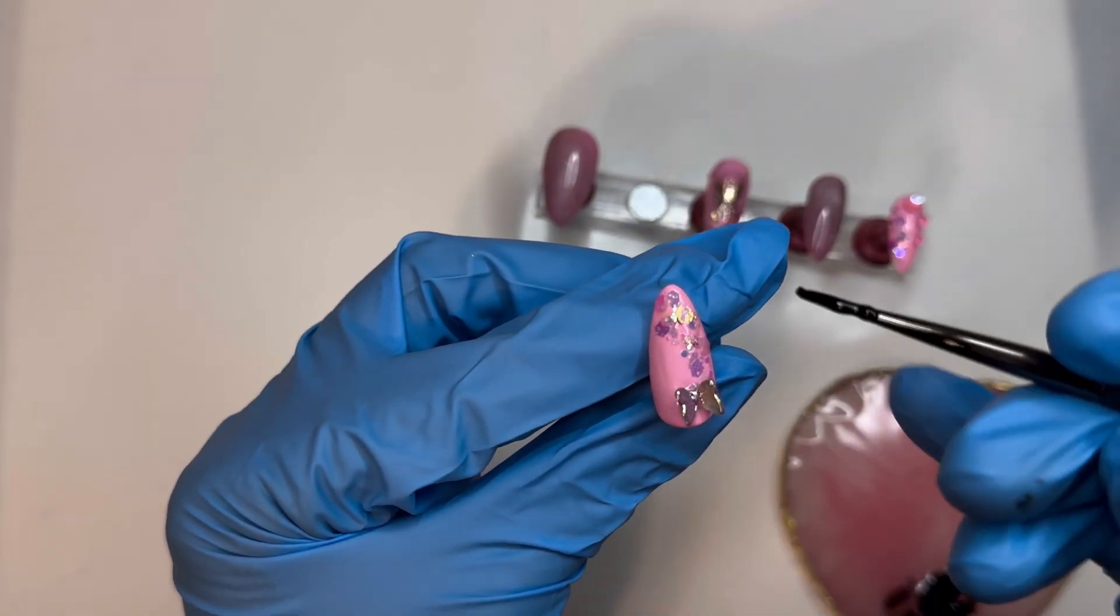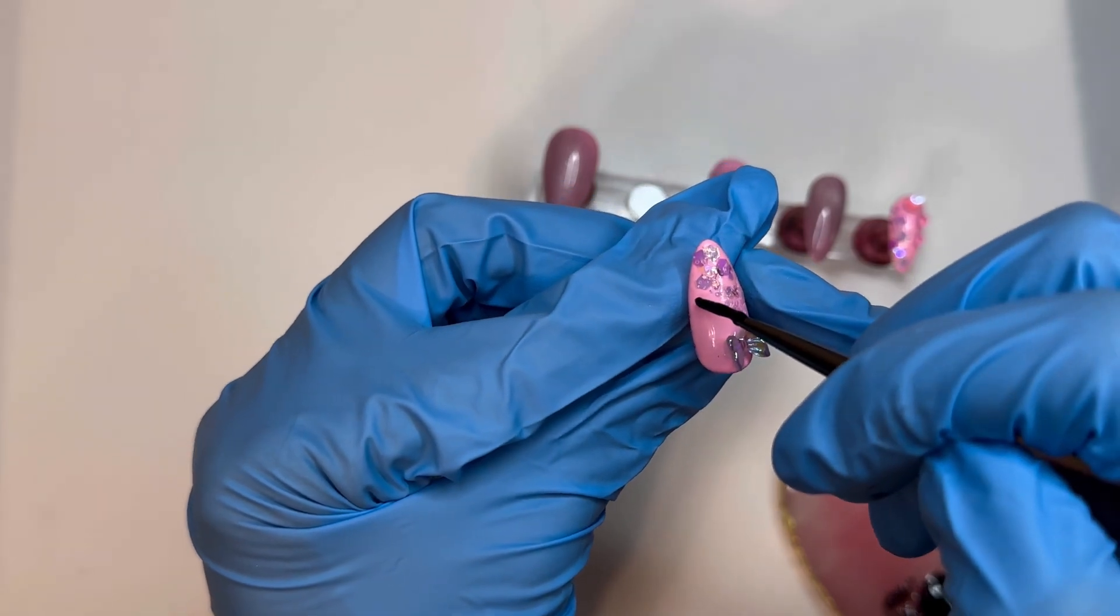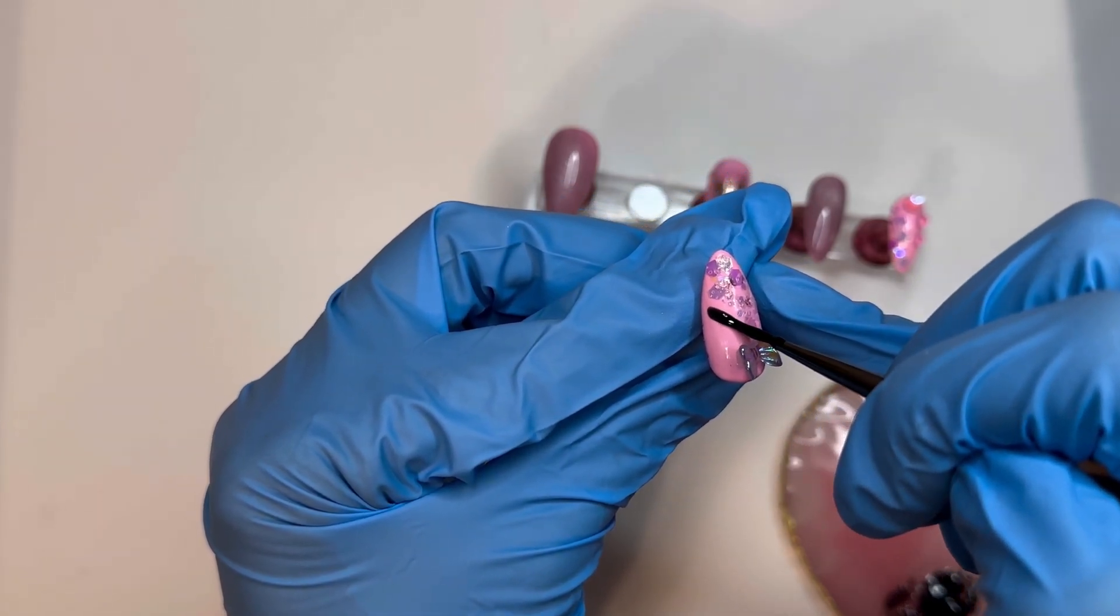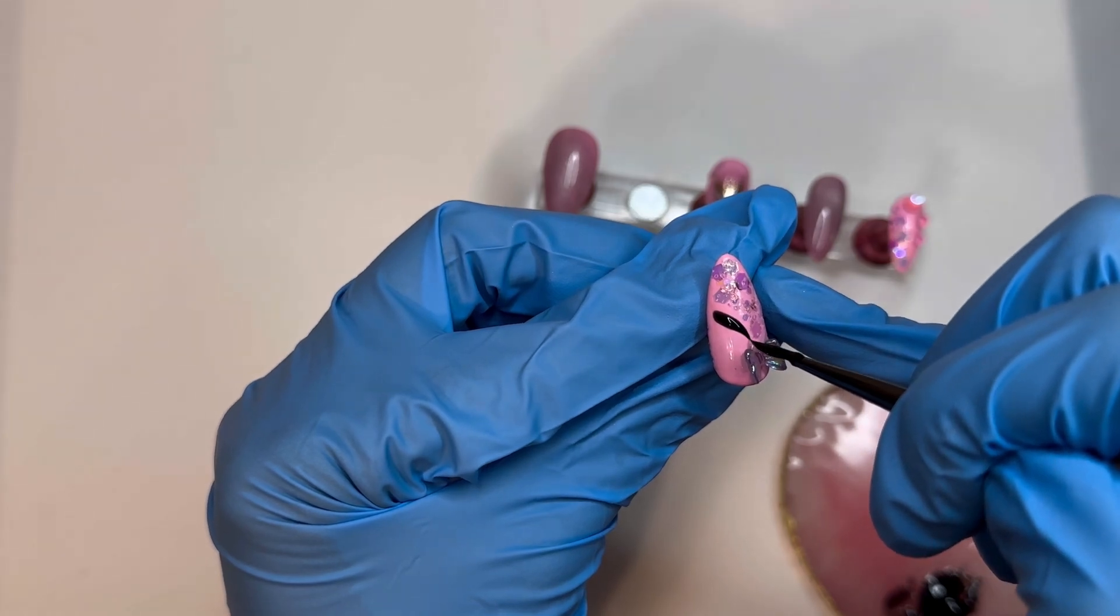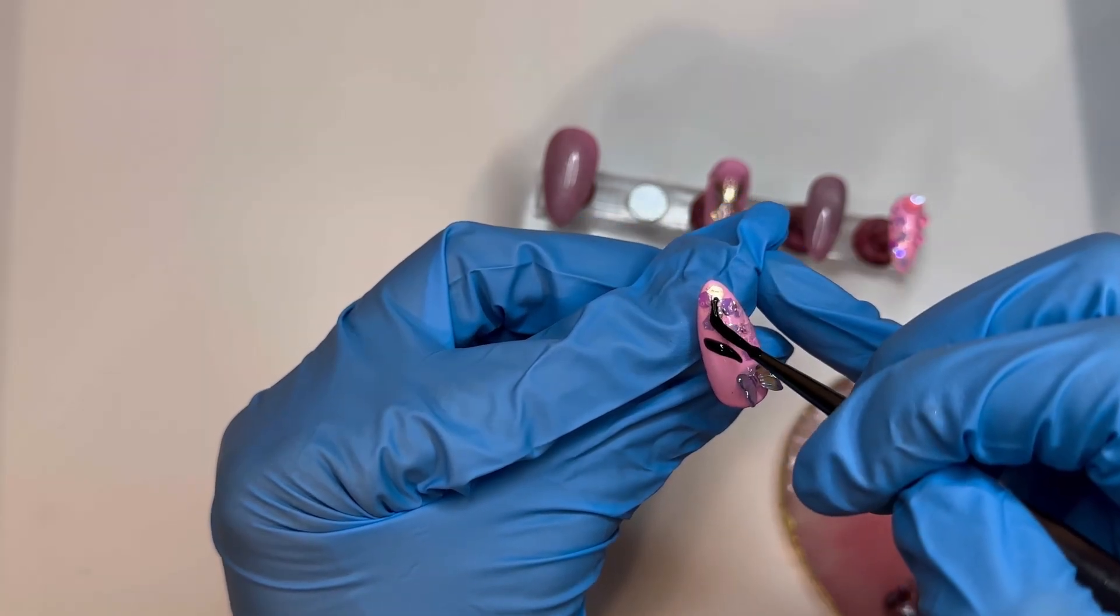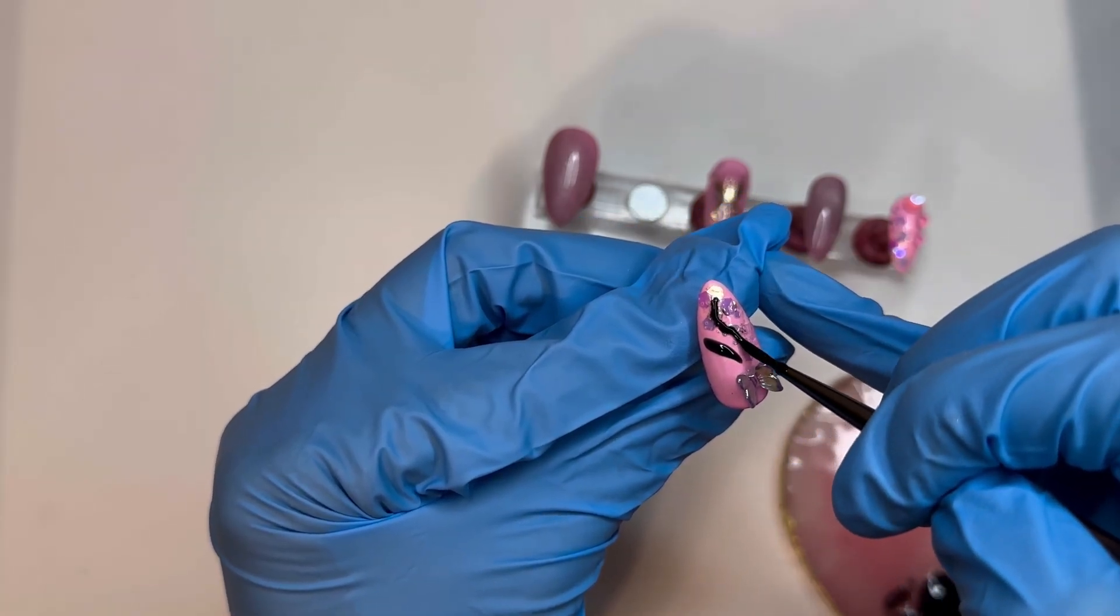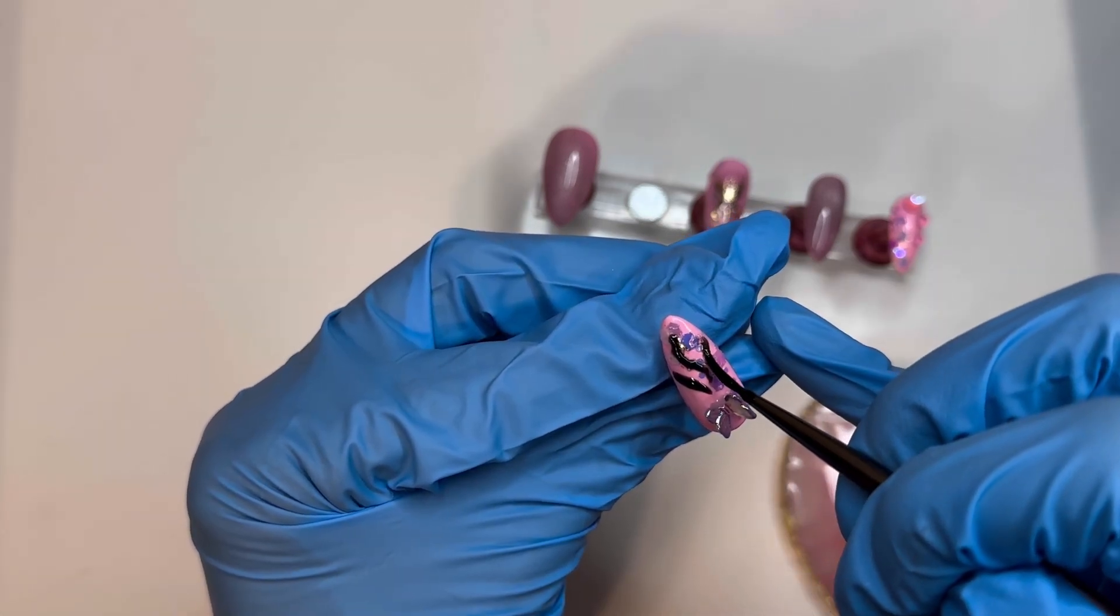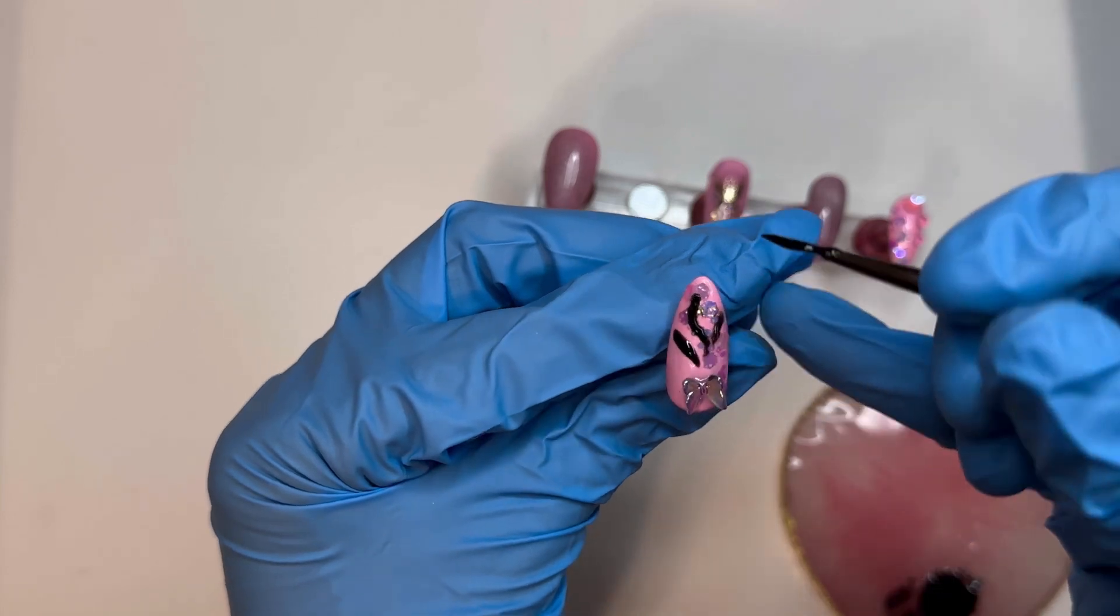This nail is going to have some chrome on it, as if it's like little powder or just something left behind from the butterfly flying off. So I mixed some rhinestone glue and some black gel polish and I'm just creating those kind of lines underneath the butterfly, and then I'm going to cure them under my lamp for 45 to 60 seconds.